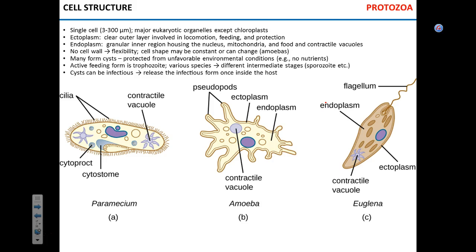That concludes the virus section — we now move on to protozoa. The quiz you collect on your way out is all about viruses. Regarding protozoa, there are a lot of them. What's common between all protozoa? They're all eukaryotic, they all have main organelles like mitochondria and endoplasmic reticulum, except chloroplasts — protozoa are not photosynthetic. Also, they do not have a cell wall, which is a distinctive characteristic.